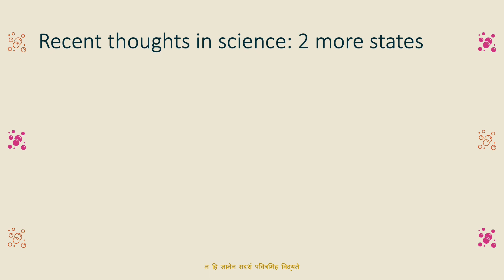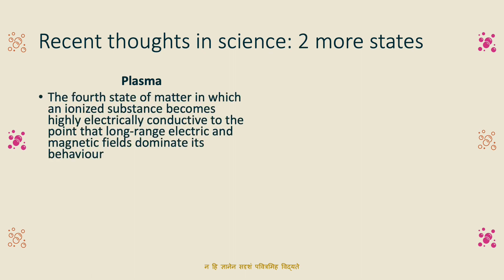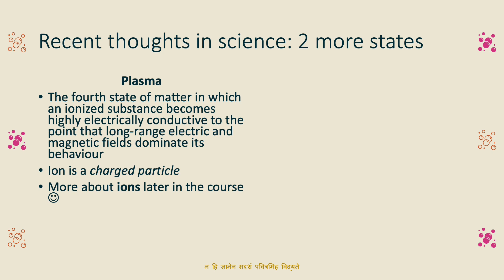Besides these three states, recent science in the last 100 years has discovered two more states. The first is plasma. Plasma is an ionized substance with electrically charged ions. It is characterized by high temperature and is electrically conductive. The second additional state is Bose-Einstein Condensate.